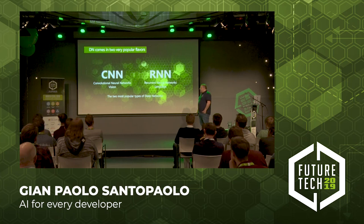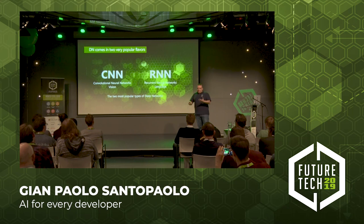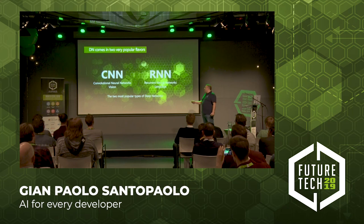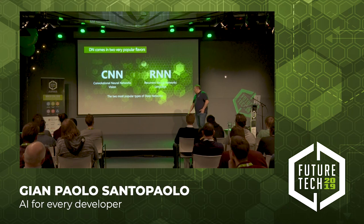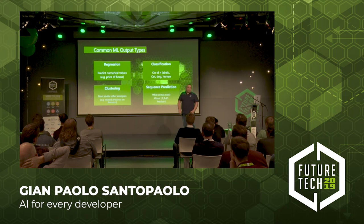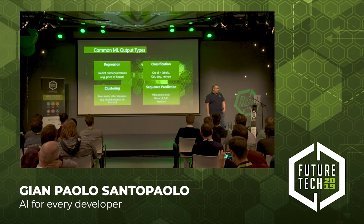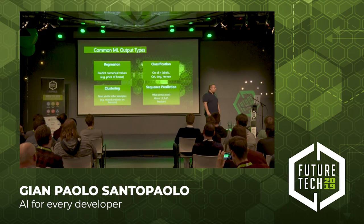Stacking up a number of artificial neurons, we get a layer of neurons. Stacking up several layers, we get what is called a deep neural network. The most important deep neural networks you will use are convolutional networks and recurrent neural networks. The output types we expect from artificial intelligence are: regression (prediction of numerical values), classification (it's a cat, it's a dog), clustering (the most similar — like Amazon product recommendations), and sequence prediction (what is the next number).